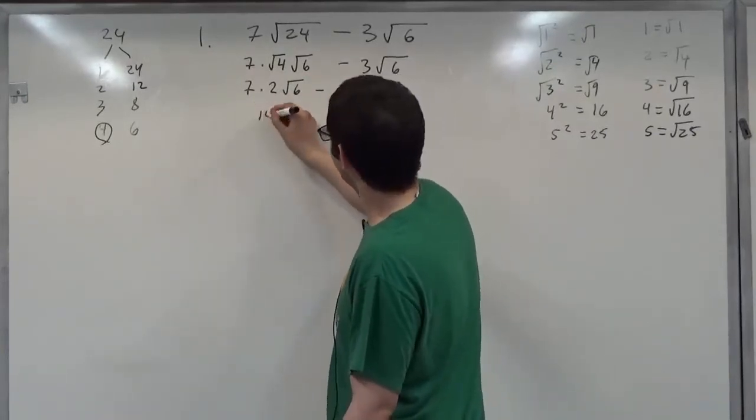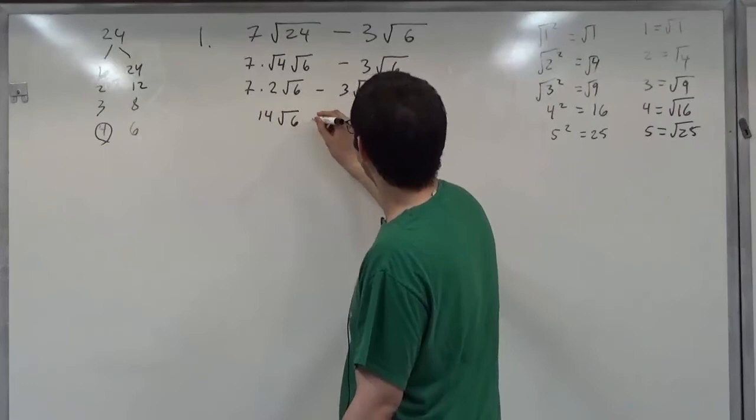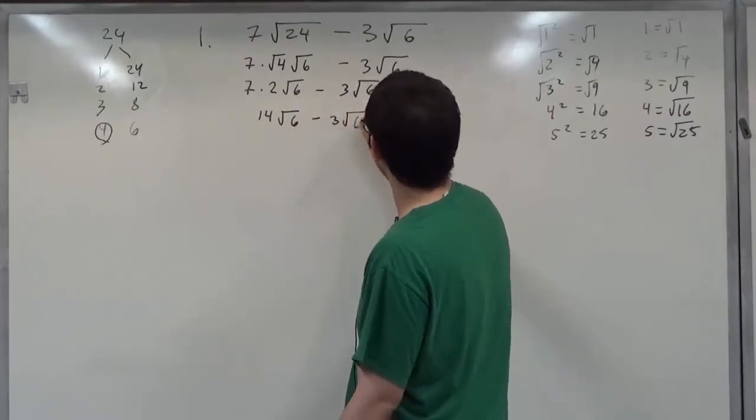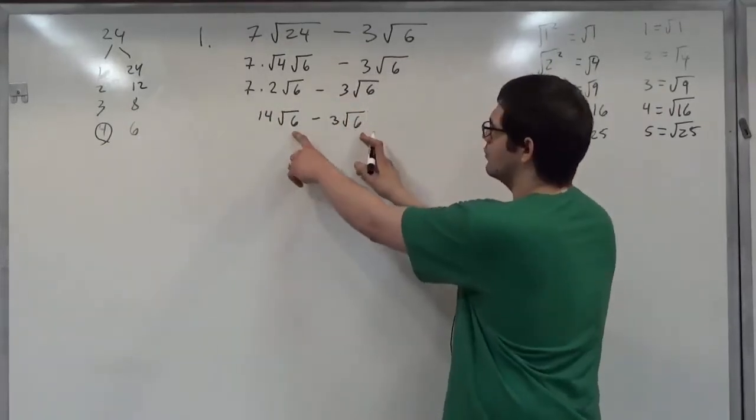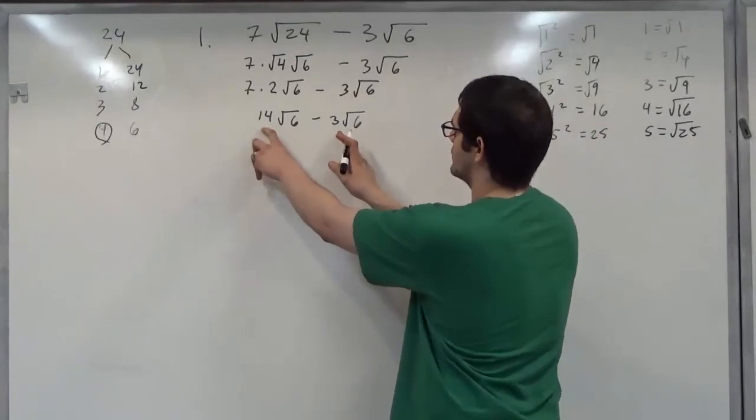Seven times two is fourteen square root six minus three square root six. Now that they both have the same square root, we can subtract the coefficients.